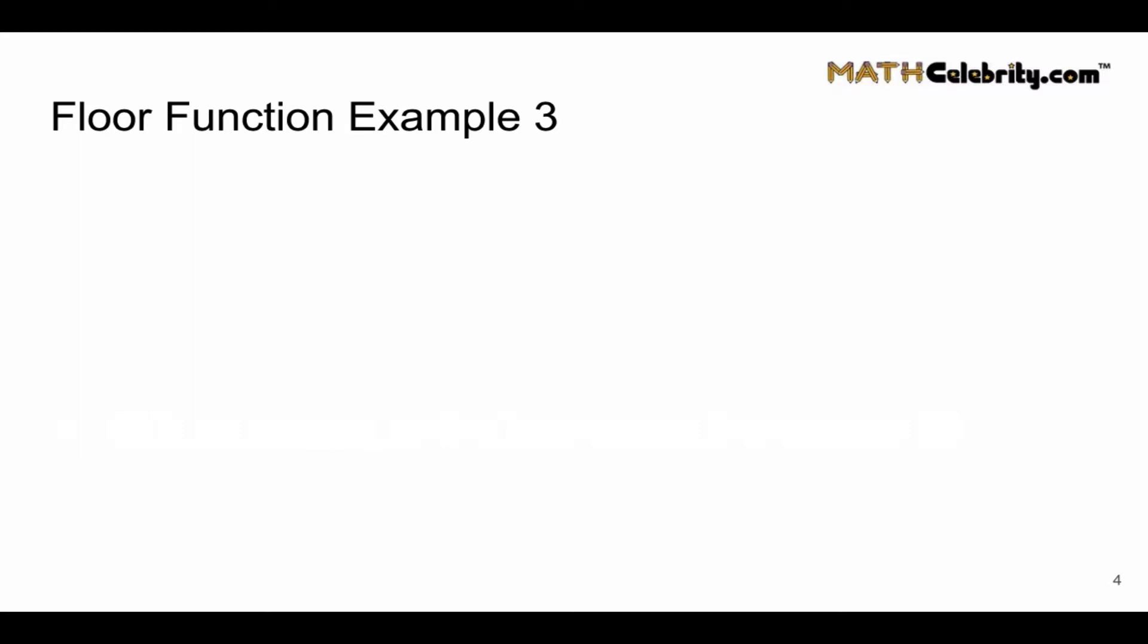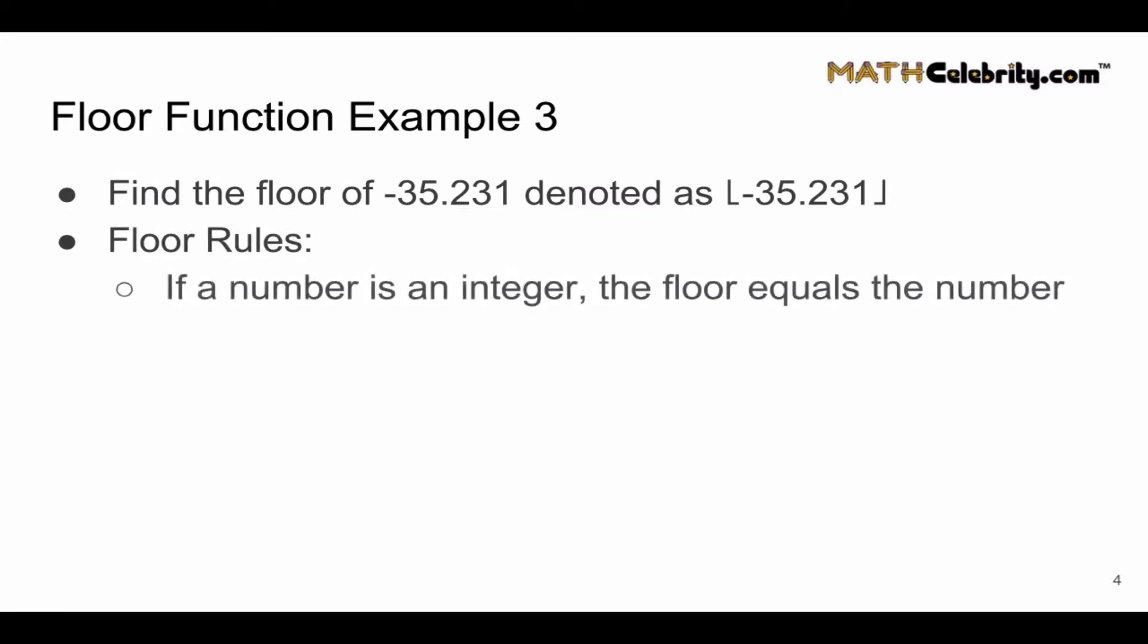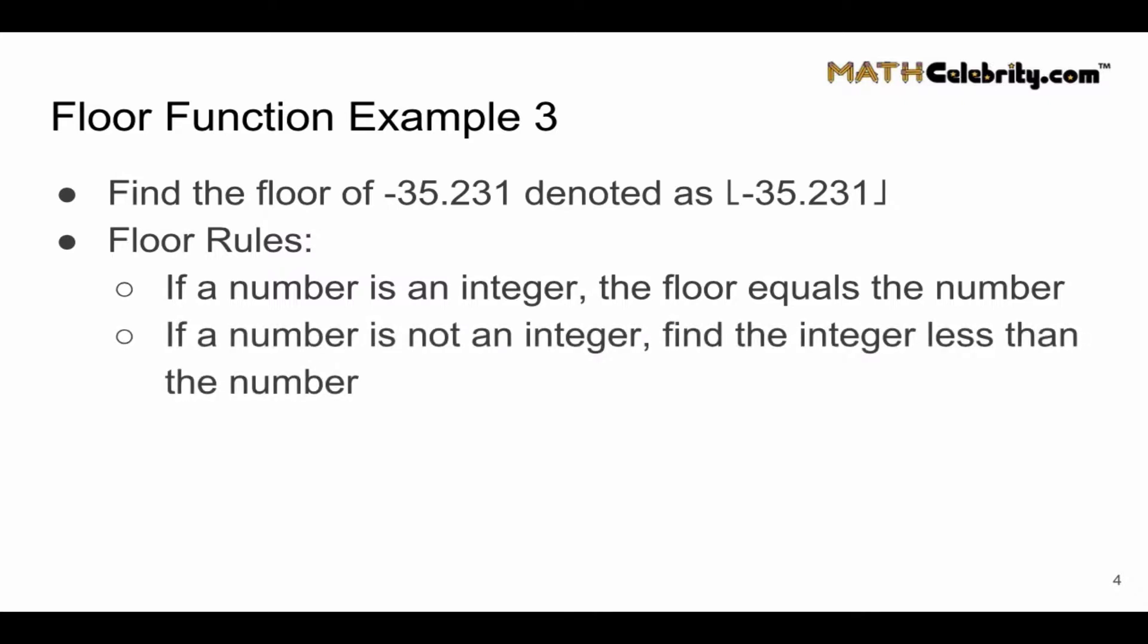Now let's walk through one more example: negative numbers. We want to find the floor of negative 35.231. We go through our two-step floor rules. It's not an integer so we move to step two. It is a decimal.